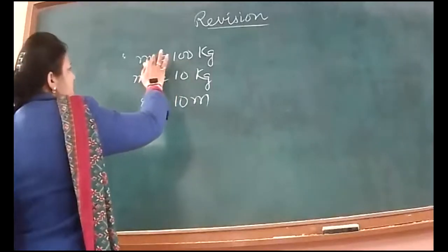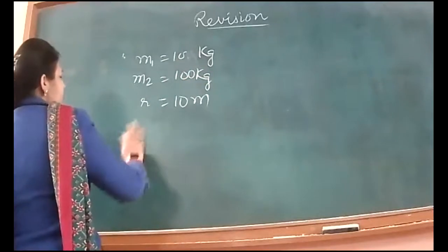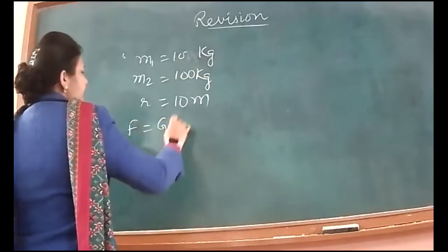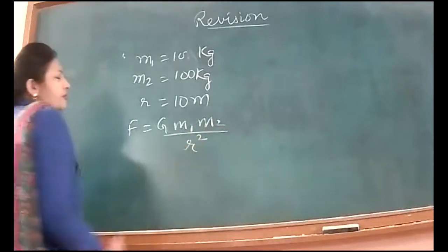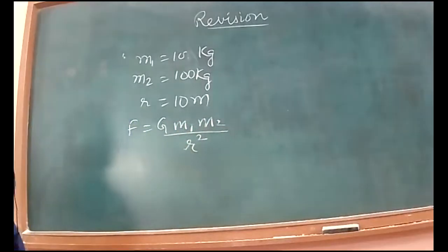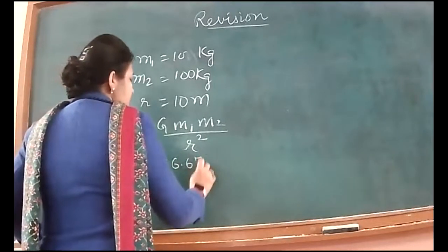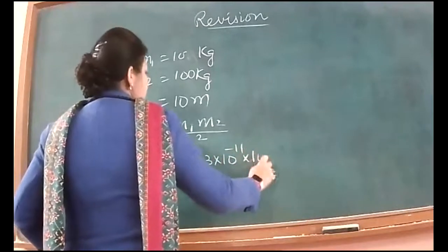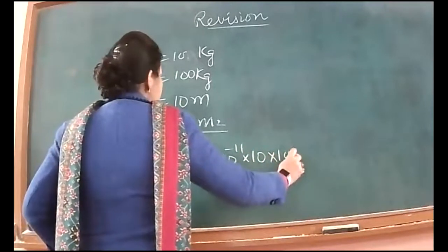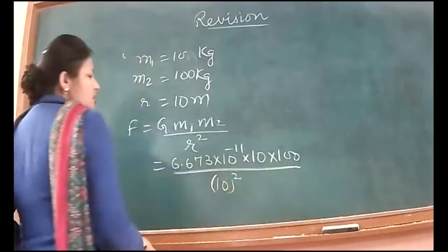This is 10 and this is 100. Okay, so F is equal to G M1 M2 upon R square. F is equal to G M1 M2 upon R square. Put the value of G, 6.673 into 10 raised to power minus 11. This is 10, this is 100 and this is 10 square, which is also 100.